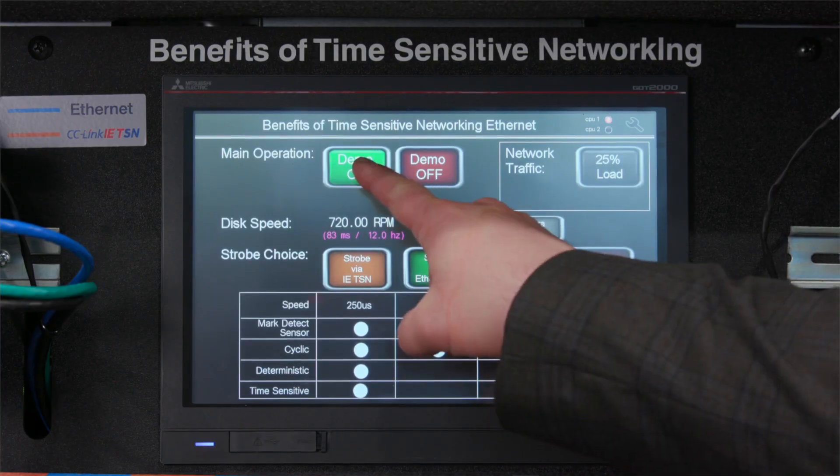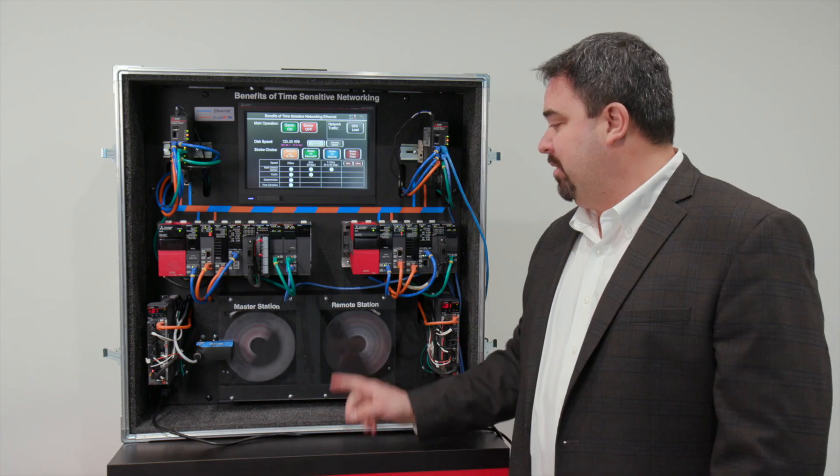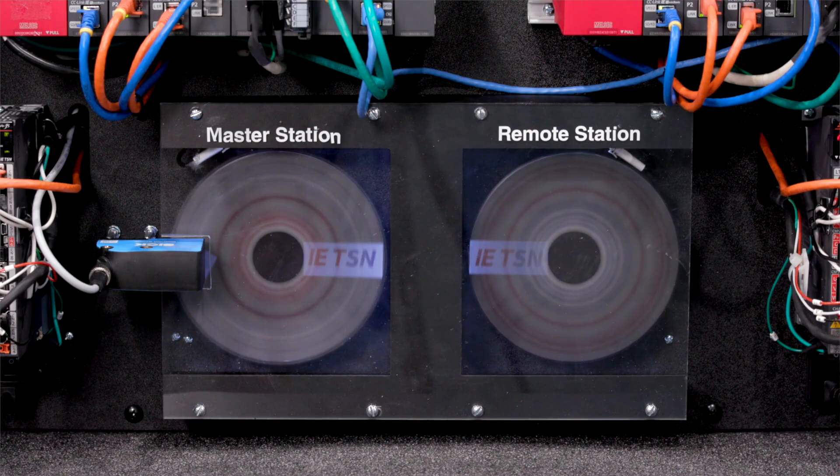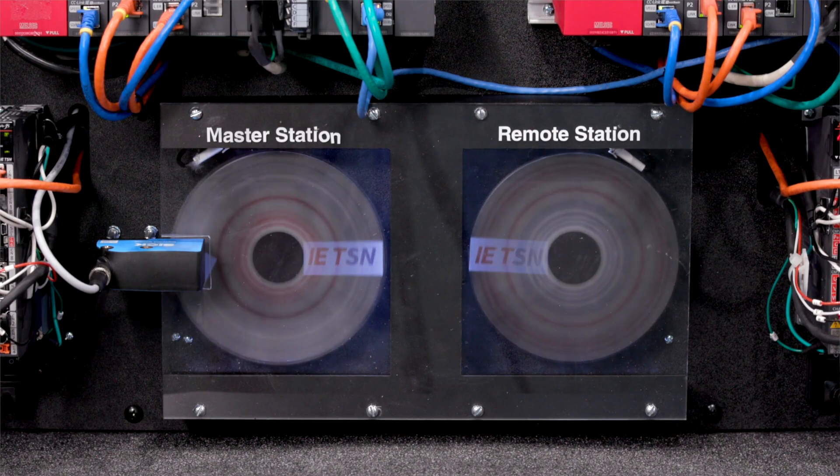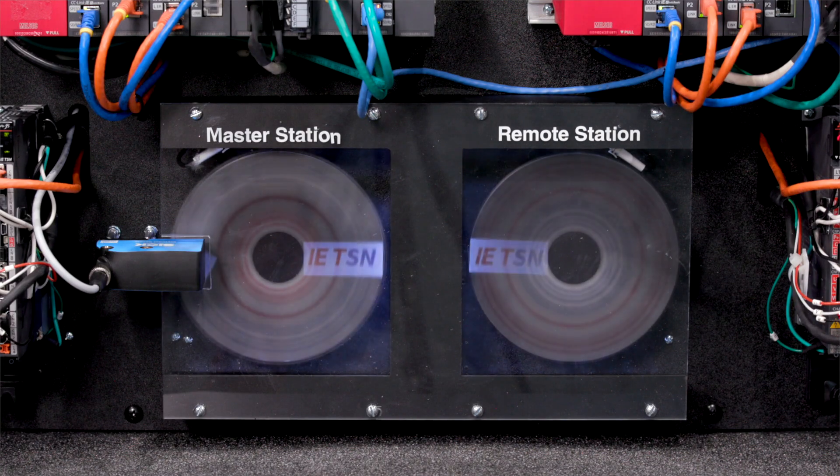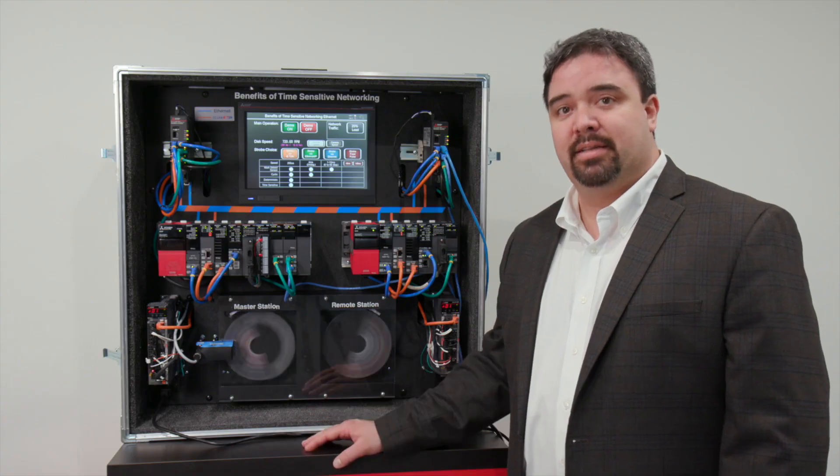I'm going to turn the demonstration on and we're going to start out in CC-Link IETSN mode. And as you can see we can clearly see both TSN logos and they're identical and that's the benefit of a deterministic network. So CC-Link IETSN is deterministic.